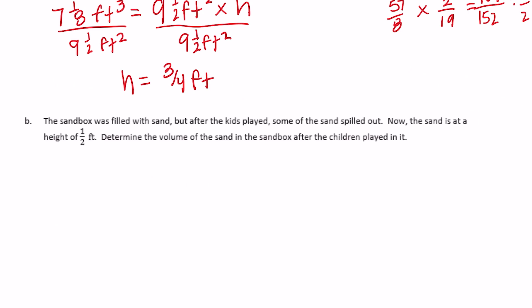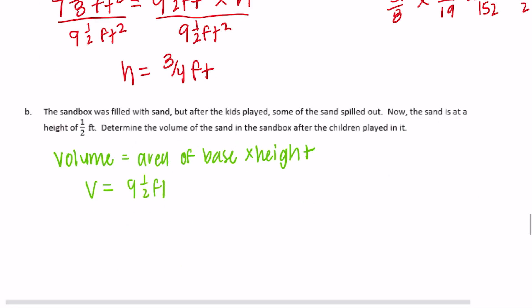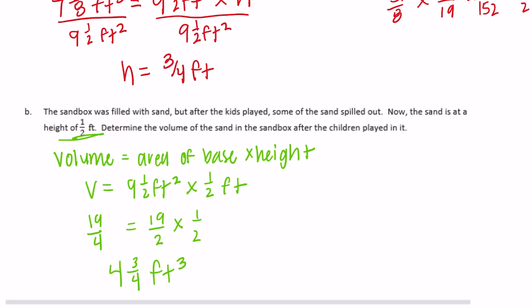We're going to use the same formula: volume is equal to area of the base times the height. This time the volume we don't know, but the area of the base stays the same — 9 and 1/2 feet squared — and the height is half a foot. So 9 and 1/2 times 1/2: 19 halves times 1/2 equals 19/4, which is 4 and 3/4 feet cubed — the new volume.